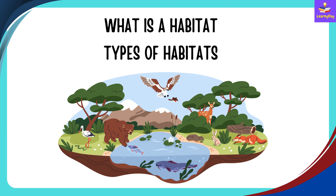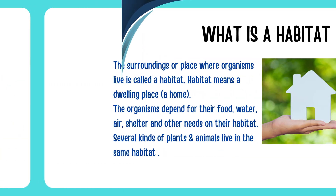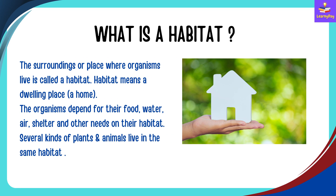In this video we are going to talk about what is a habitat and what are the types of habitats. The surroundings or place where organisms live is called a habitat. Habitat means a dwelling place, a home. The organisms depend on their habitat for food, water, air, shelter, and other needs.